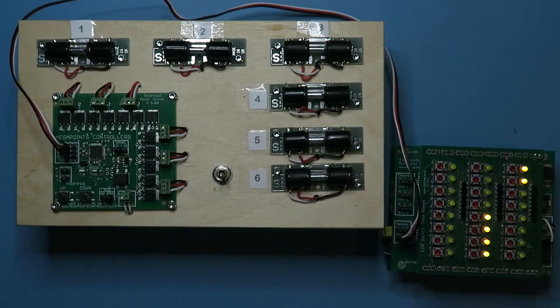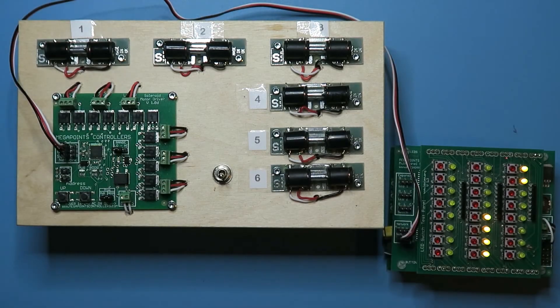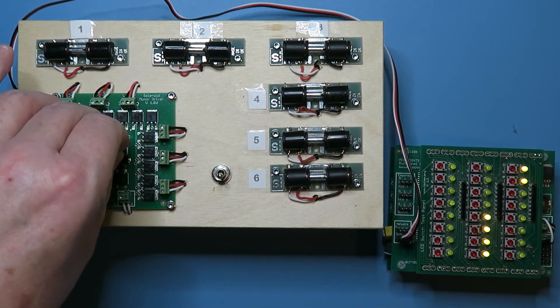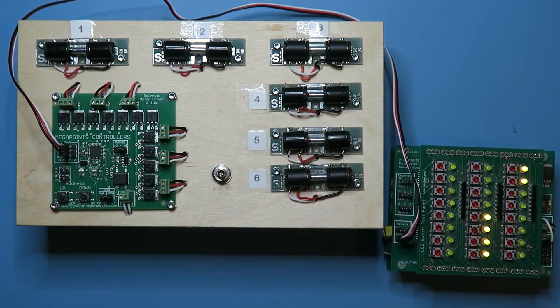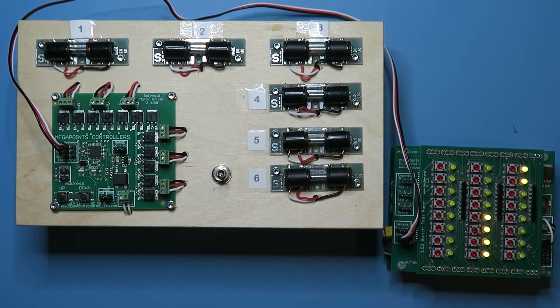And to address 19 to 24, whilst it's on address 3, all I have to do is pull the jumper out and put it onto the high range. And you'll hear them already jumping as the multi-panel controls them.